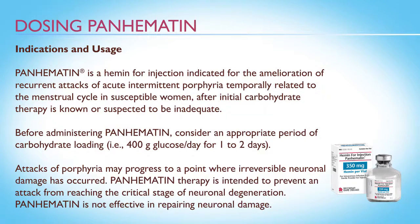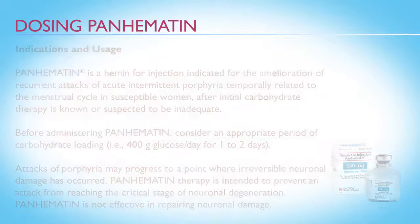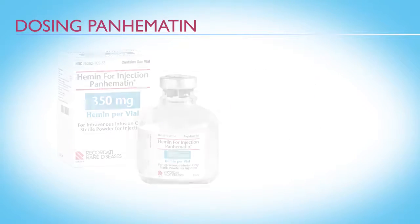Attacks of porphyria may progress to a point where irreversible neuronal damage has occurred. Panhematin therapy is intended to prevent an attack from reaching the critical stage of neuronal degeneration. Panhematin is not effective in repairing neuronal damage.